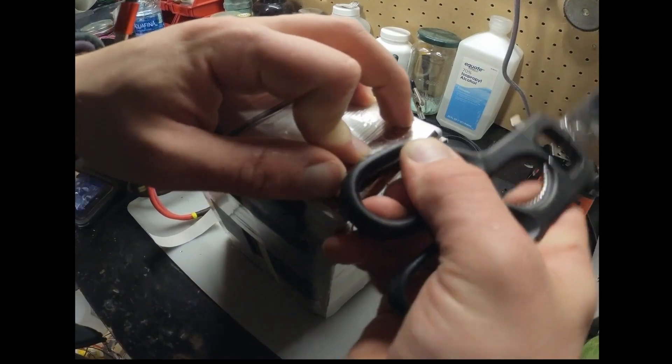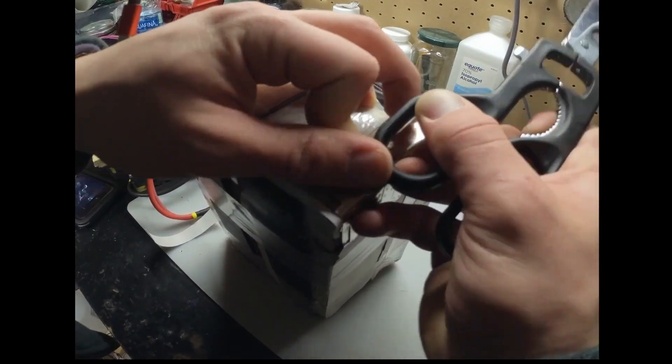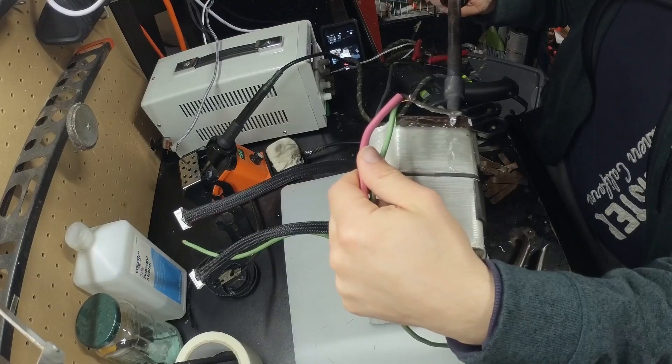I then folded and tinned the front side to solder the main leads on, and repeated the other side. Again, covering with fish paper.